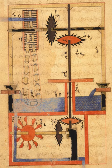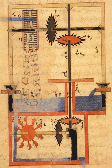Otherwise, bodies may be semi-rigid, i.e. elastic, or non-rigid, i.e. fluid. These subjects have both classical and quantum divisions of study. For instance, the motion of a spacecraft, regarding its orbit and attitude, is described by the relativistic theory of classical mechanics, while the analogous movements of an atomic nucleus are described by quantum mechanics.